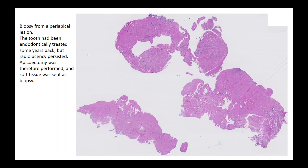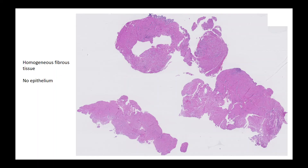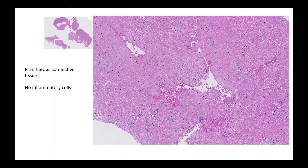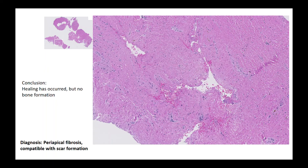A new biopsy from a periapical lesion where the tooth had been endodontically treated some years back but the radiolucency persisted; apicoectomy was performed. The biopsy shows irregular pieces of homogeneous fibrous tissue with no epithelium — densely packed fibrous tissue with only few fibroblasts and hardly any inflammatory cells. There has been a healing process, but bone formation has not occurred; instead healing is with fibrosis. The diagnosis is periapical fibrosis compatible with scar formation.